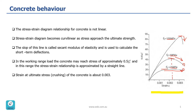Also, the slope of the line at the beginning of the curve, which is kind of linear — for 25 MPa and for 50 or 100 MPa — is called the secant modulus of elasticity, and it's used to calculate short-term deflections. In the working load range, the concrete may reach a stress of approximately half of f'c, and the stress-strain diagram is approximated by a straight line.